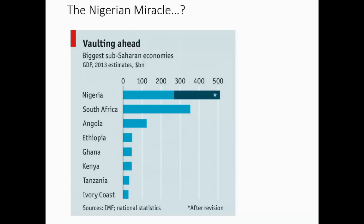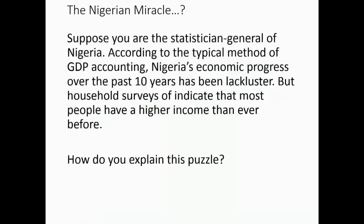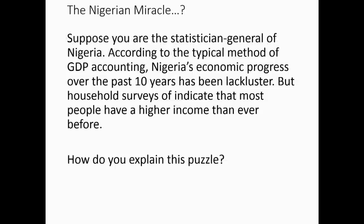Before, South Africa was for a long time the largest economy in Africa. Then Nigeria basically vaulted ahead, simply by changing the way it calculates GDP. Why might one do this? According to the usual method of GDP accounting, Nigeria's economic progress over the last 10 years had been pretty lackluster. But based on household surveys asking actual households how their real economic conditions changed, it seemed like there had been pretty good growth — people are a lot better off. So how do you explain this? Let's ponder that as we think about measuring GDP.